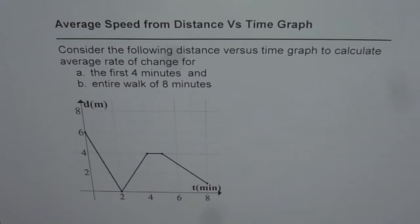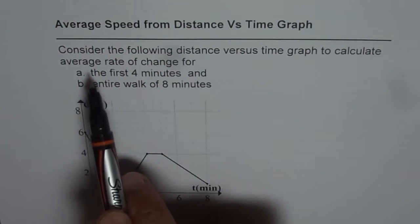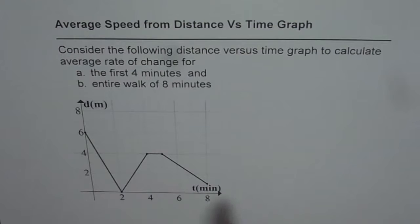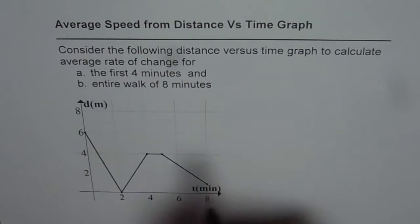You can pause the video, solve, and then look into my solution. Well, we need to find average rate of change. In this graph we have distance on the y-axis and time on the x-axis. So the average rate of change is change in distance over change in time.